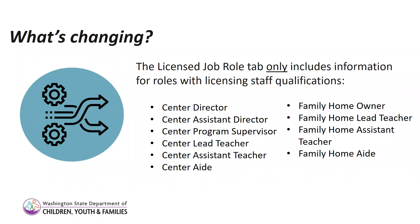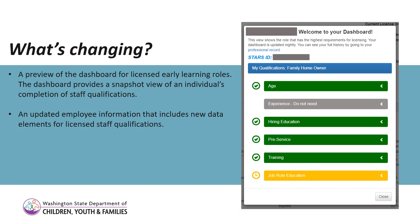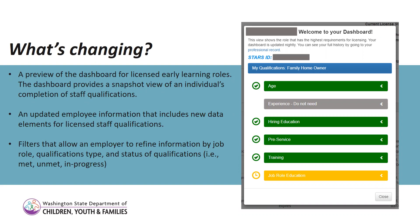It does this by narrowing the employee list to only show information for job roles with licensing staff qualifications. It also allows you to preview your staff's individual dashboards. Dashboards provide a color-coded snapshot view of where an individual is at in completing role requirements. This page also includes updated column headers specific to licensed staff qualifications. It also has filters that allow an employer to refine information by job role, qualification type, and the status of the qualification, such as whether it has been met, is unmet, or the person is still in progress towards meeting the requirements.